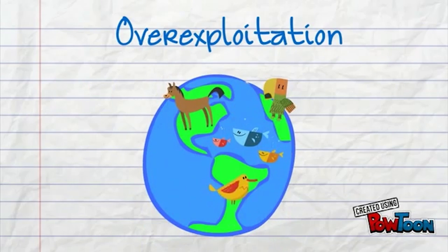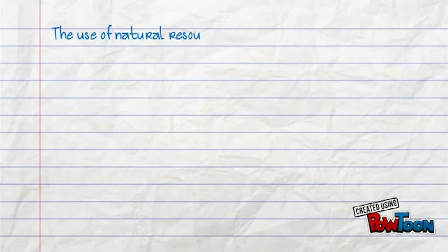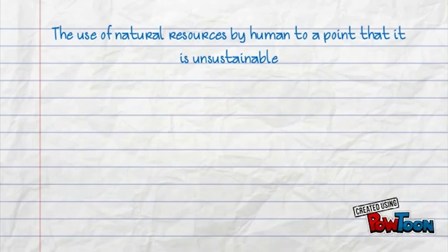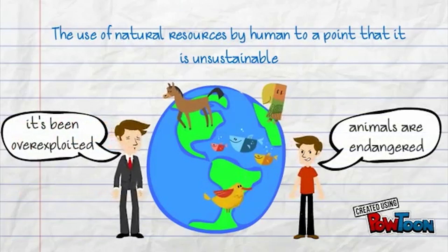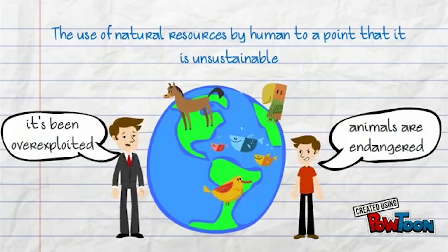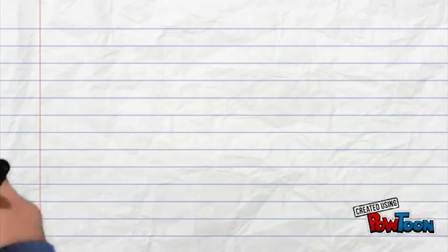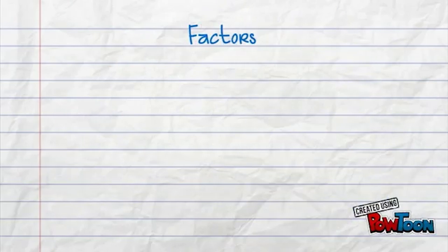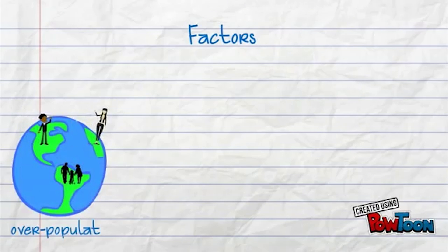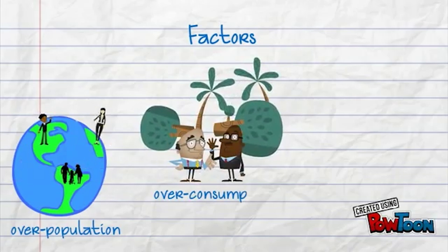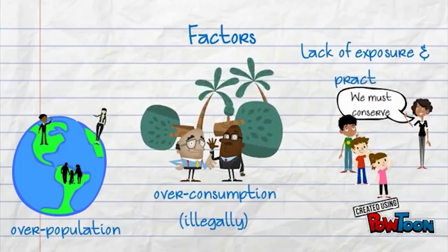Let's start with the definition of over-exploitation. Over-harvesting is another word that can be used in place of over-exploitation, which simply means the use of a natural resource by humans to a point that is unsustainable. So, what are the factors that lead to over-exploitation? Factors which contribute include increase in human population growth, human over-consumption of natural resources, and a lack in the practice of conservation and management of natural resources.